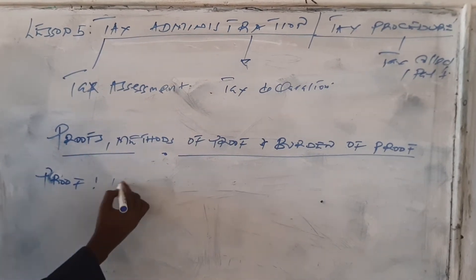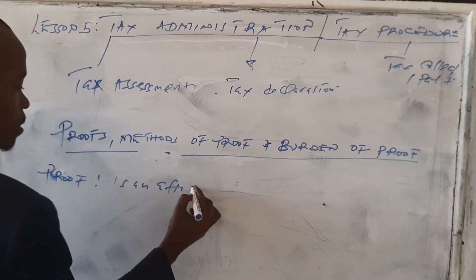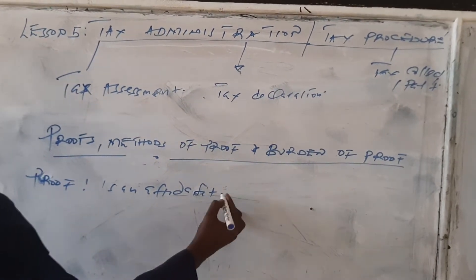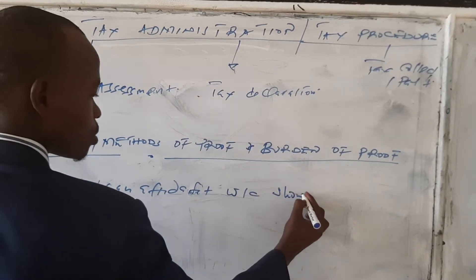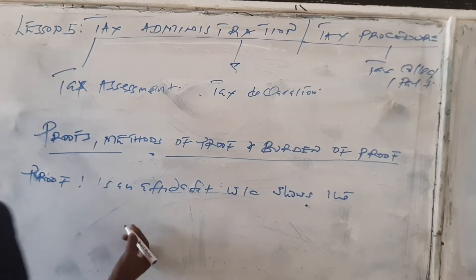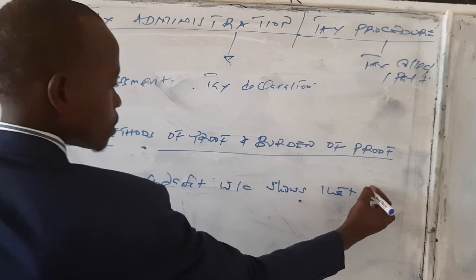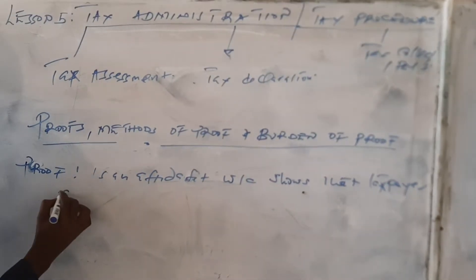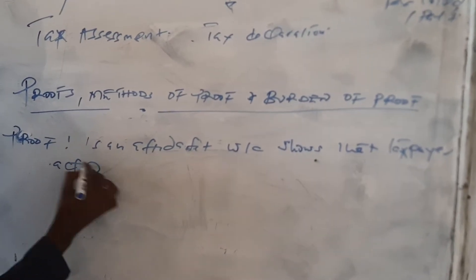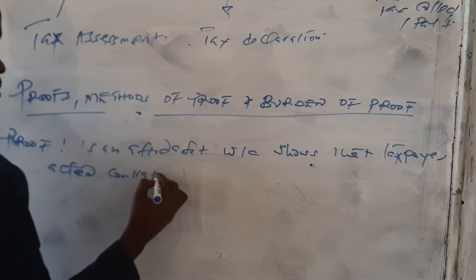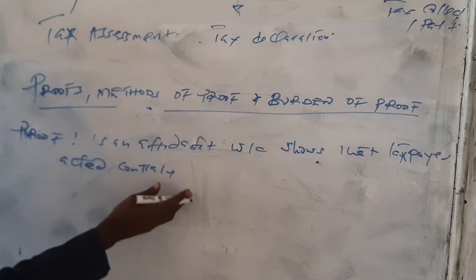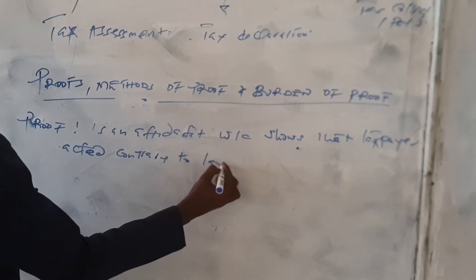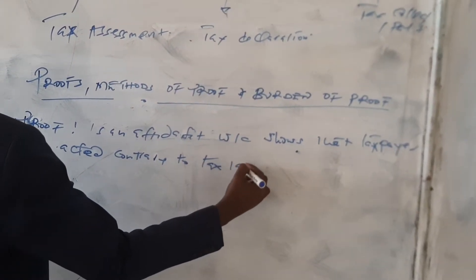The meaning of proof is an affidavit. An affidavit is like evidence which shows that the taxpayer acted contrary to tax laws.